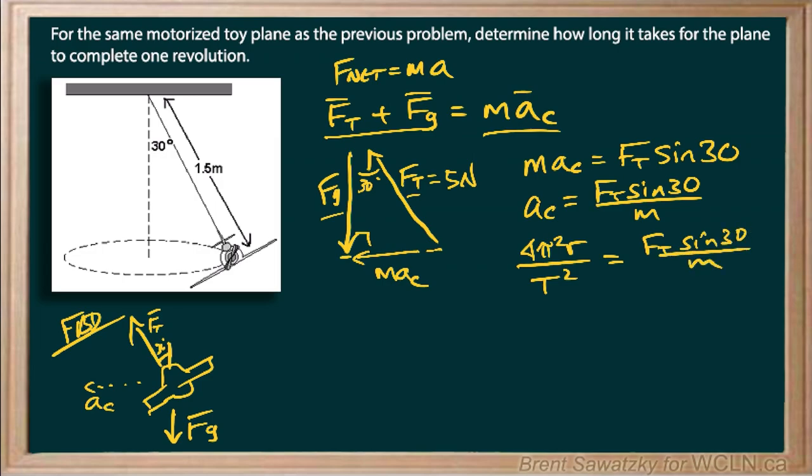Okay, so rearranging that to show a little steps in your work, but T is equal to the square root of M times 4 pi squared R over FT sine 30. And you can plug in all your numbers with that and calculate it out, 2.3 seconds. So this plane would take 2.3 seconds to get around a full loop.